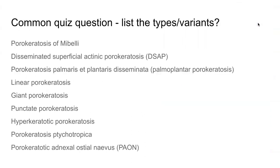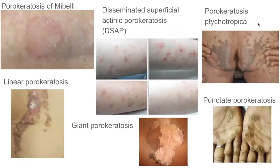A common quiz question you might get asked is to list the types and variants of porokeratosis. There's a very long list, and most are captured here: porokeratosis of Mibelli, disseminated superficial actinic porokeratosis (otherwise known as DSAP), porokeratosis affecting the palms and soles, linear porokeratosis, giant porokeratosis, punctate hyperkeratotic porokeratosis, porokeratosis ptychotropica, and rarer forms.